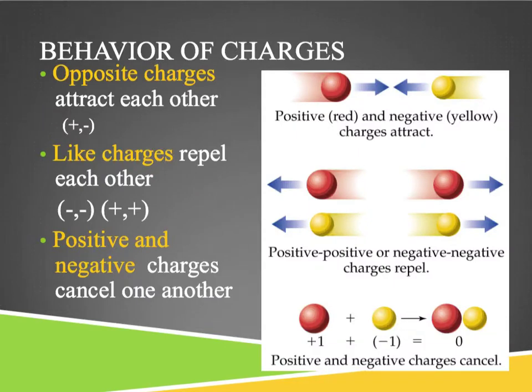Just to review how these charges act when they're around each other: if you have opposite charges like positive and negative, those two things will attract. Like charges will repel each other, and that includes negative-negative pairs and positive-positive pairs. When opposite charges come together with equal amounts of both, they cancel each other out. This is stuff we talked about last semester so none of this should be new.